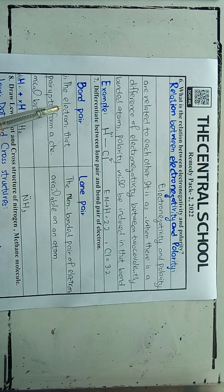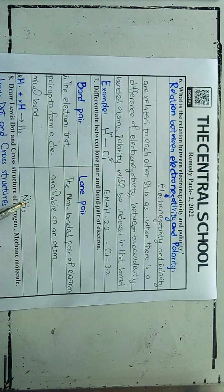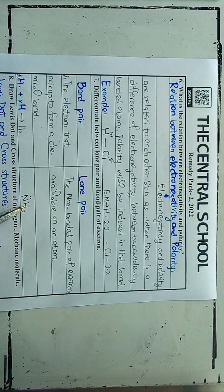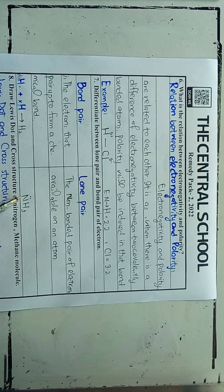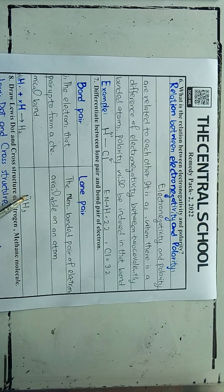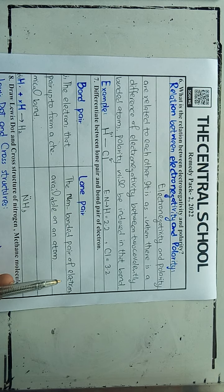Whereas in ammonia, nitrogen has three electrons which are bonded with three hydrogen atoms, and the two electrons available on the nitrogen will be the lone pair because they are free and available for donation — so it is a non-bonded pair of electrons.